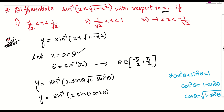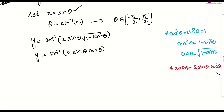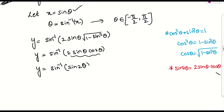So we will be getting y equals sin inverse of 2 into sin theta into cos theta. We have one more formula: sin 2 theta equals 2 sin theta into cos theta. I will be applying the same formula, so y equals sin inverse of sin 2 theta. We cannot simply say sin inverse of sin theta equals theta because they have given some limits — we need to handle those now.